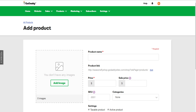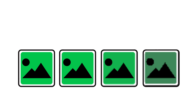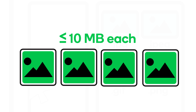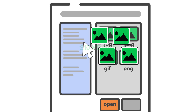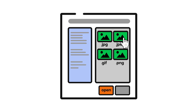You add products one at a time. Before you start adding images, be sure yours are good quality, are no larger than 10 MB each, and you know where to find them. Acceptable file types are .jpg, .jpeg, .gif, and .png.